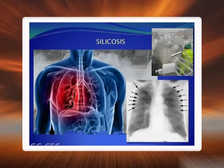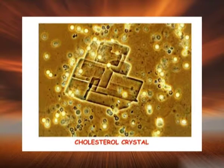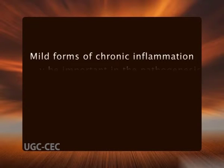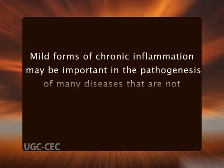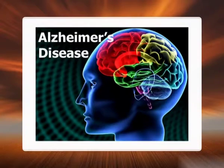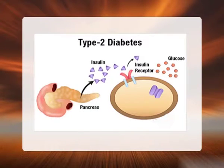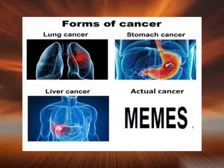Next is prolonged exposure to potentially toxic agents. Examples include non-degradable exogenous materials such as inhaled particulate silica, which can induce a chronic inflammatory response in the lungs, and endogenous agents such as cholesterol crystals, which may contribute to atherosclerosis. Mild forms of chronic inflammation may also be important in the pathogenesis of diseases not conventionally thought of as inflammatory, such as Alzheimer's disease, metabolic syndrome, type 2 diabetes, and some forms of cancer.